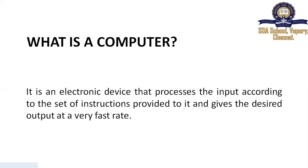Then a question arises — what is a computer? We can define computers in many ways. One of the easiest ways to define a computer is: it is an electronic device that processes input according to a set of instructions provided to it and gives the desired output at a very fast rate. It is an electronic device which can calculate faster than a human.